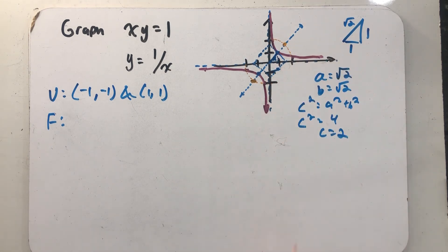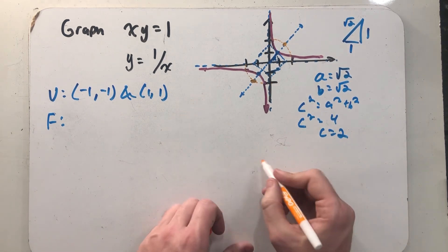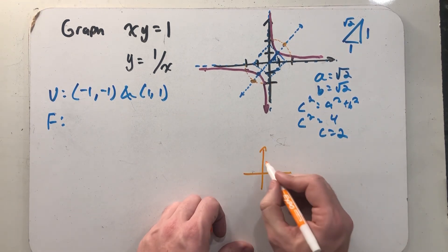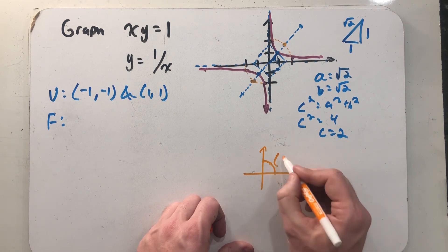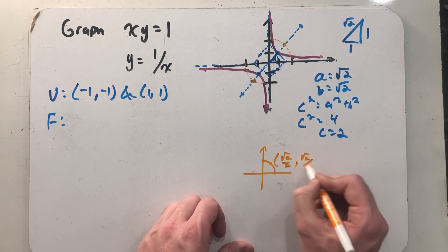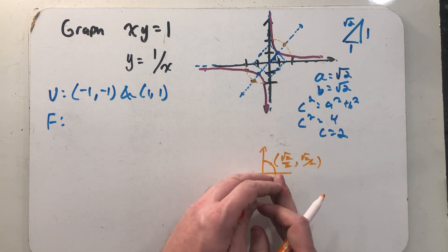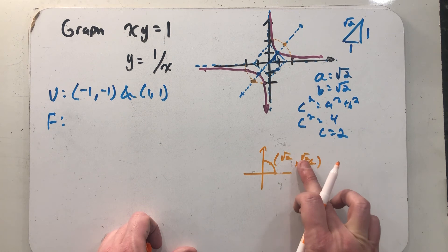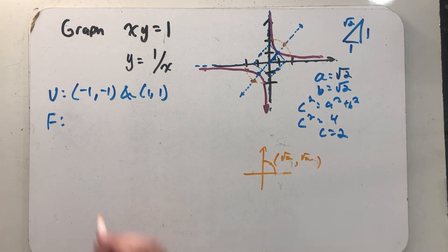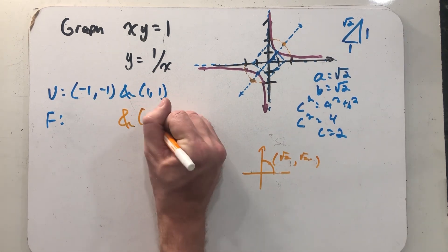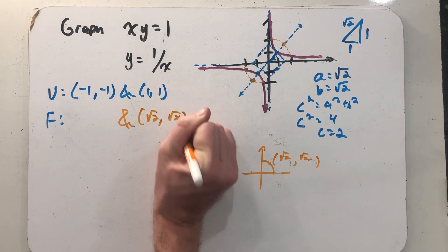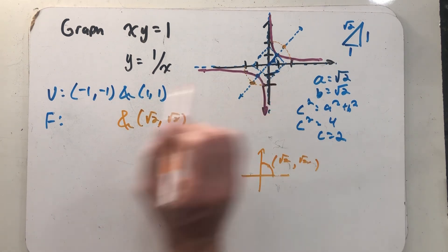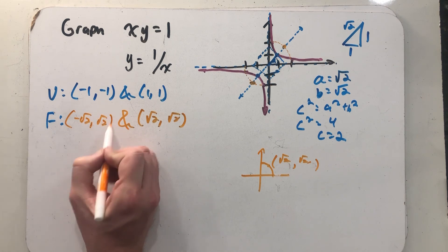It's also on a circle of radius two at a 45 degree angle, and thinking about our unit circle points, on the unit circle there at a 45 degree angle, that point is root two over two comma root two over two. So if I multiply the radius by two, that point gets shifted out to root two comma root two. So there's a focus, root two comma root two, and there's my other one at minus root two comma minus root two.